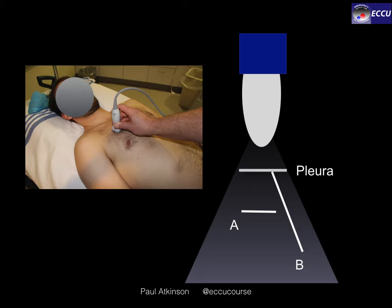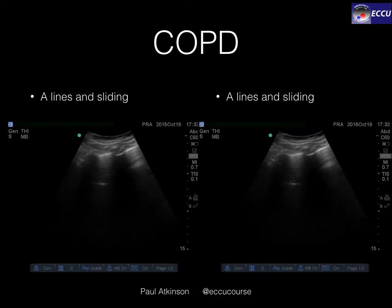More than three B-lines between two ribs is considered to be abnormal and diagnostic of interstitial syndrome. Now let's take a look at what you might see in practice.